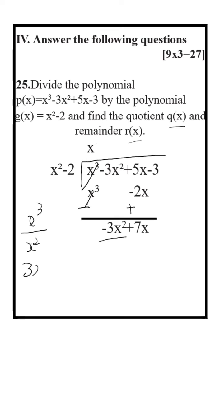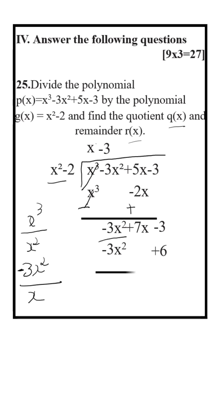Minus 3x square upon x square is equal to minus 3. Minus 3 into x square is equal to minus 3x square. Minus 3 into minus 2, that is plus 6.